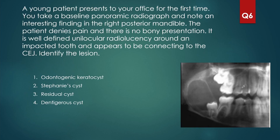A young patient presents for the first time. You take a baseline panoramic radiograph and note an interesting finding in the right posterior mandible. The patient denies pain and there is no bony expansion. It is a well-defined unilocular radiolucency around an impacted tooth and appears to be connecting to the CEJ. When you see CEJ connection, it is most often a dentigerous cyst. So the answer is dentigerous cyst.